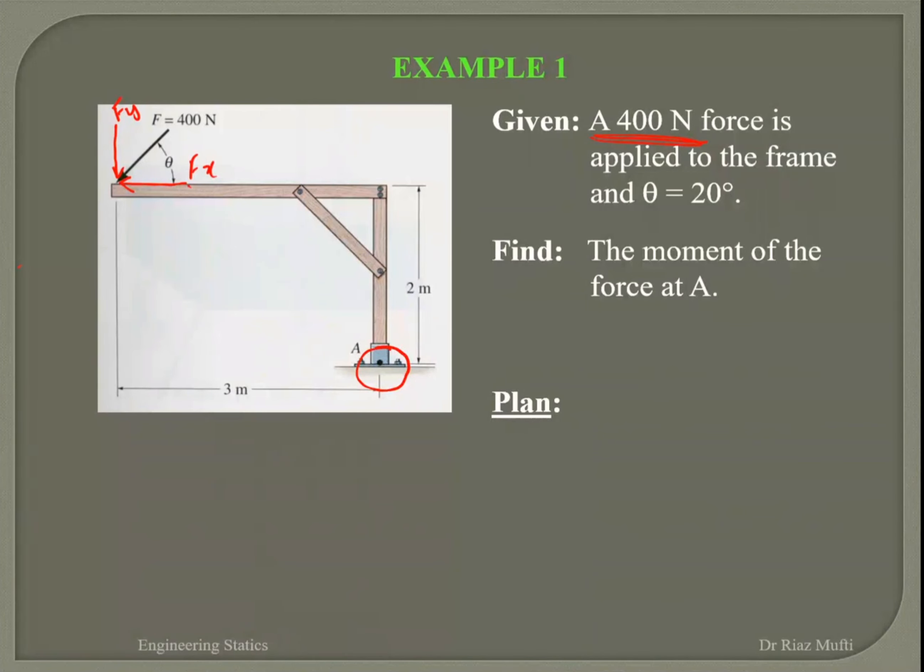So to find the moment at point A, let us look at FX first. So this is my force line multiplied by its perpendicular distance, which is this one here. At point A, if I look at FX, there's a tendency to rotate in counterclockwise direction. So I'll find my FX into two, which would give me a moment.